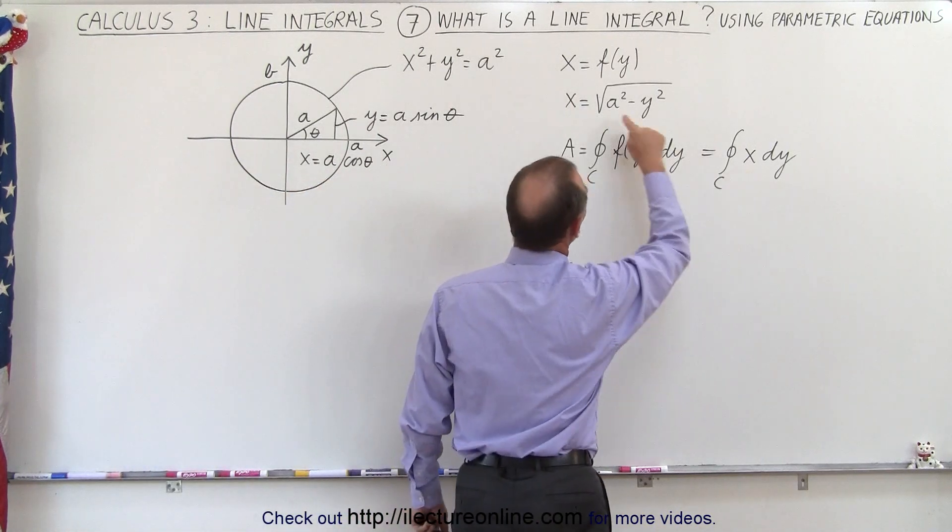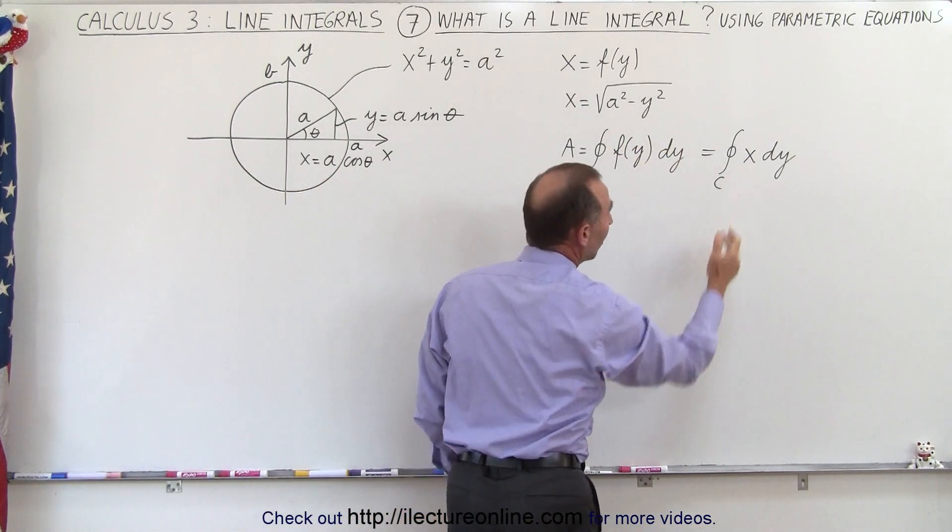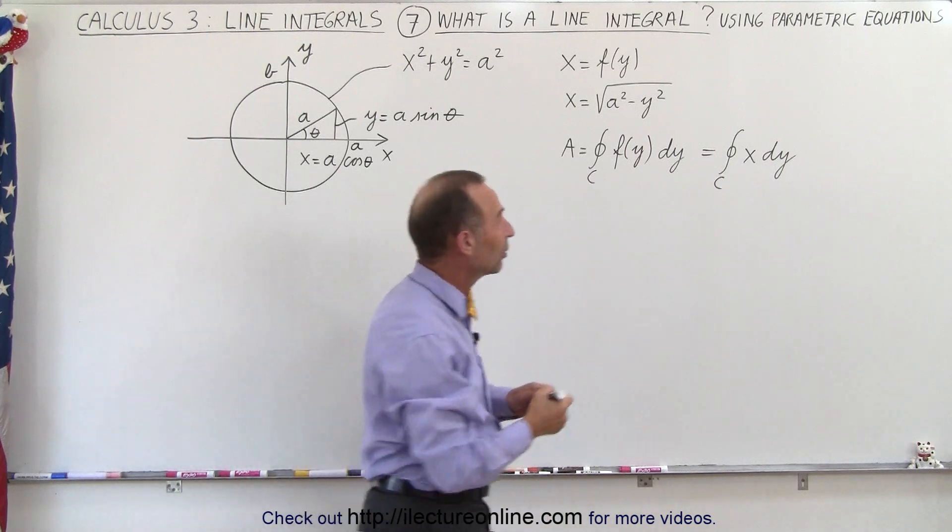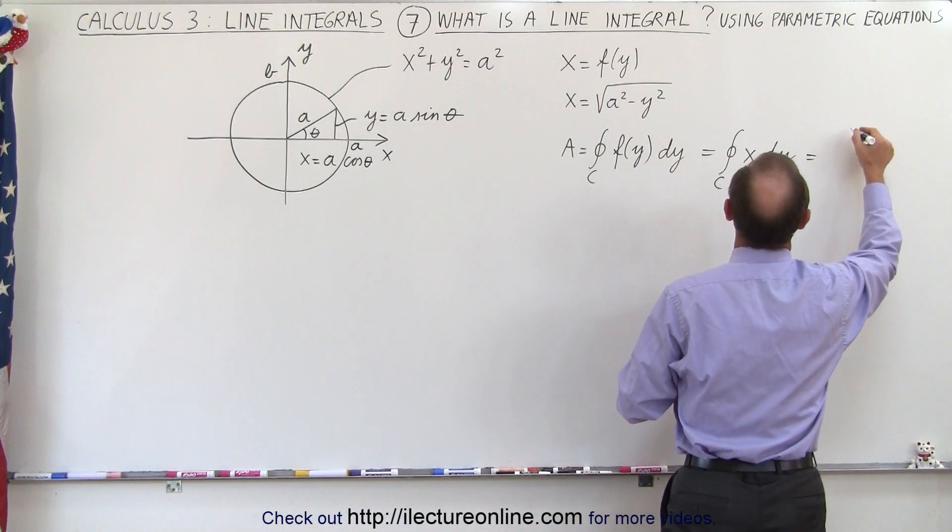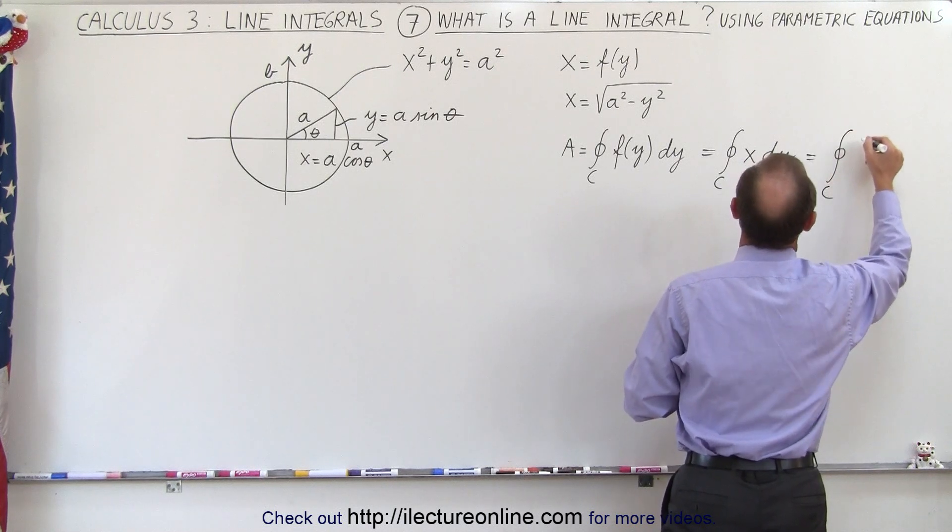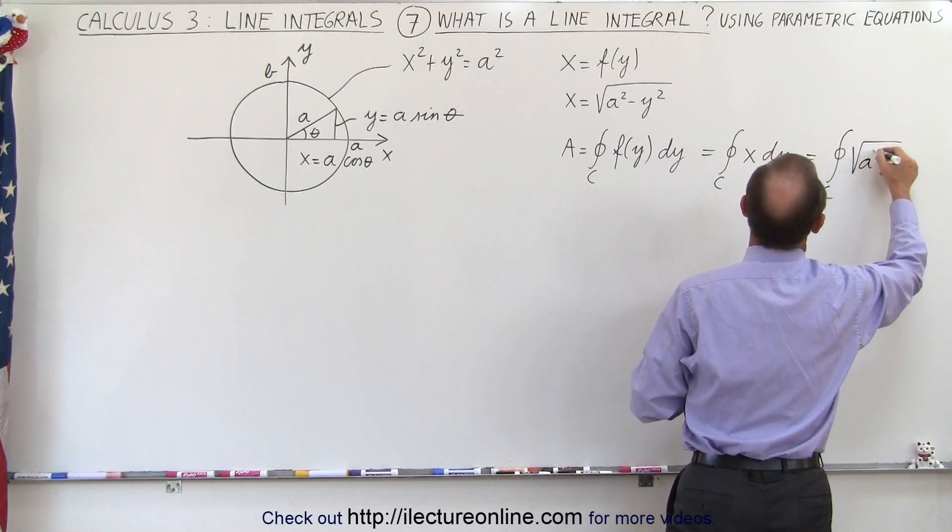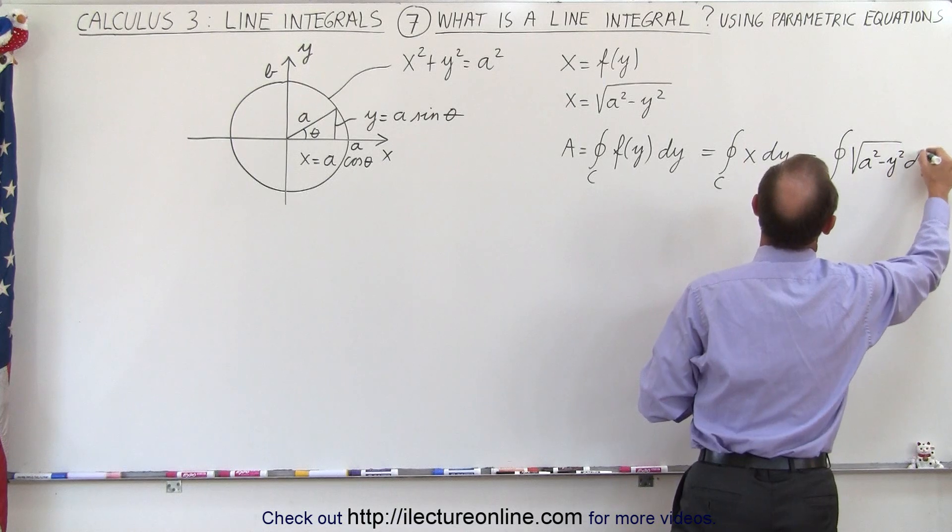Now notice, if we then replace x by the square root of a squared minus y squared, we end up with kind of a difficult integral. So let's go ahead and do that. So we can say that is equal to the integral of the square root of a squared minus y squared times dy.